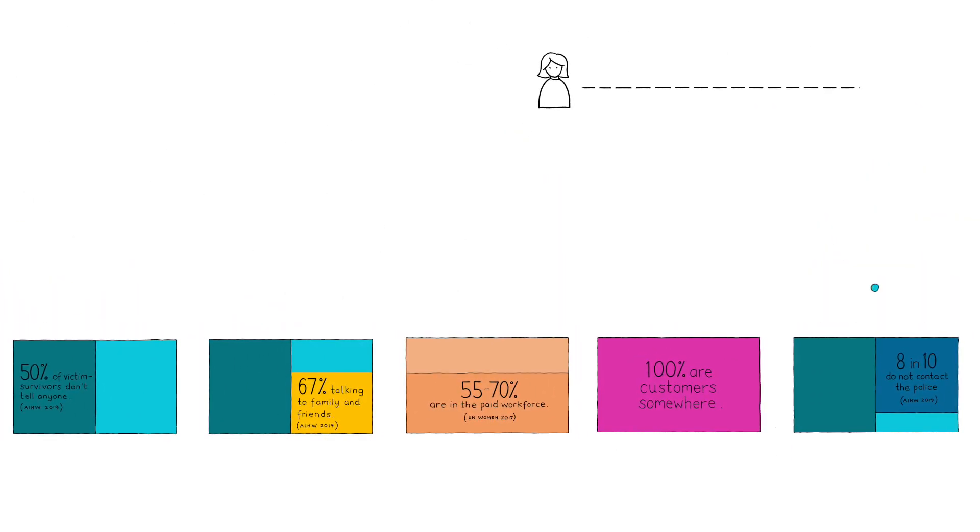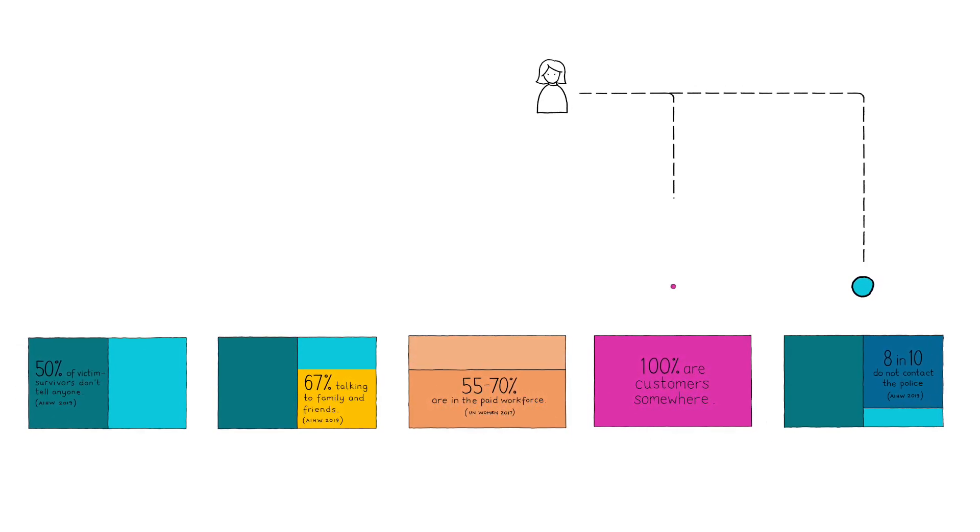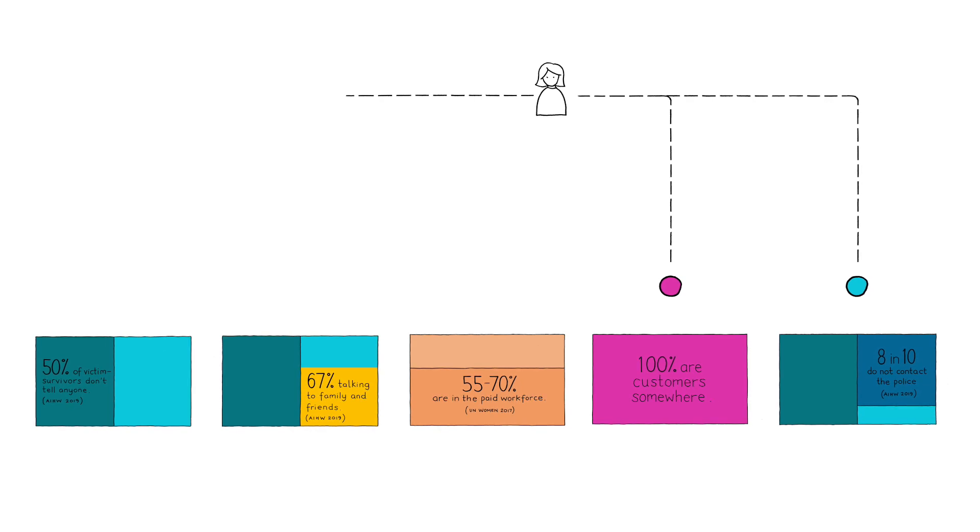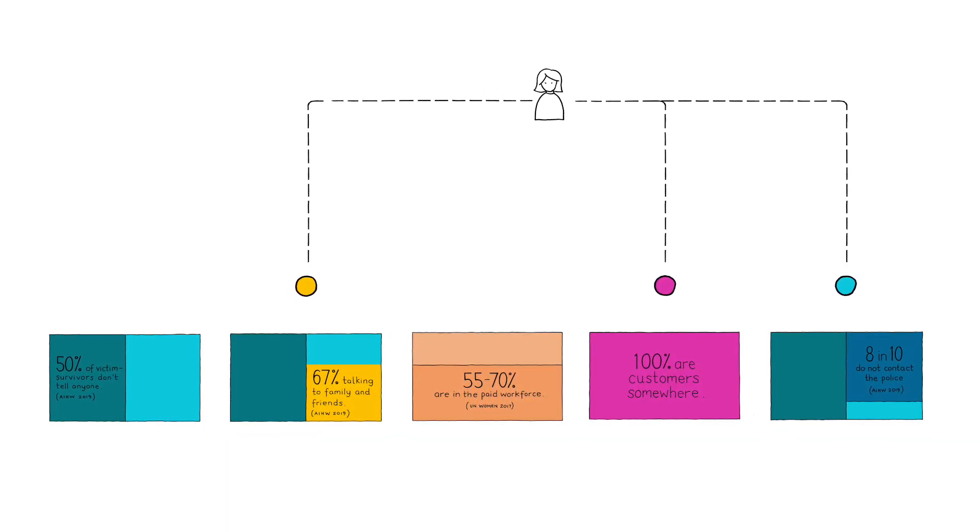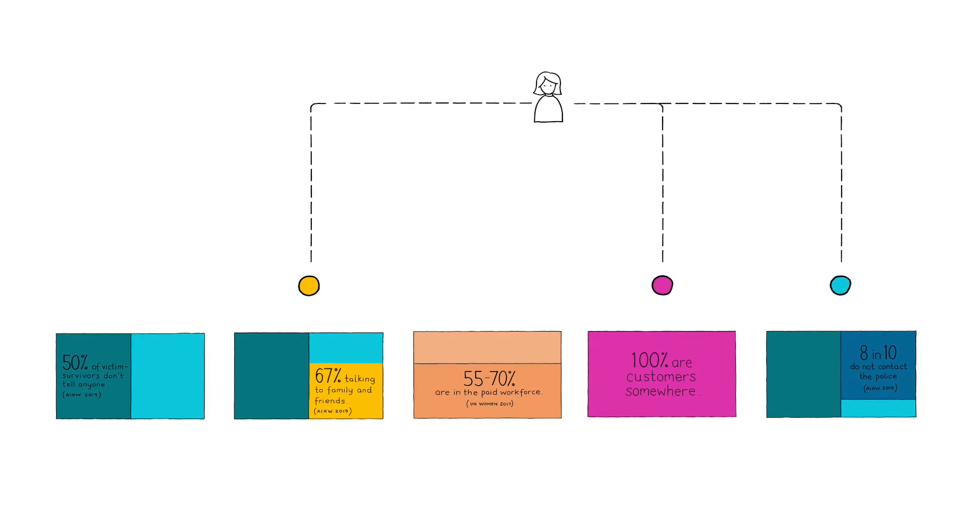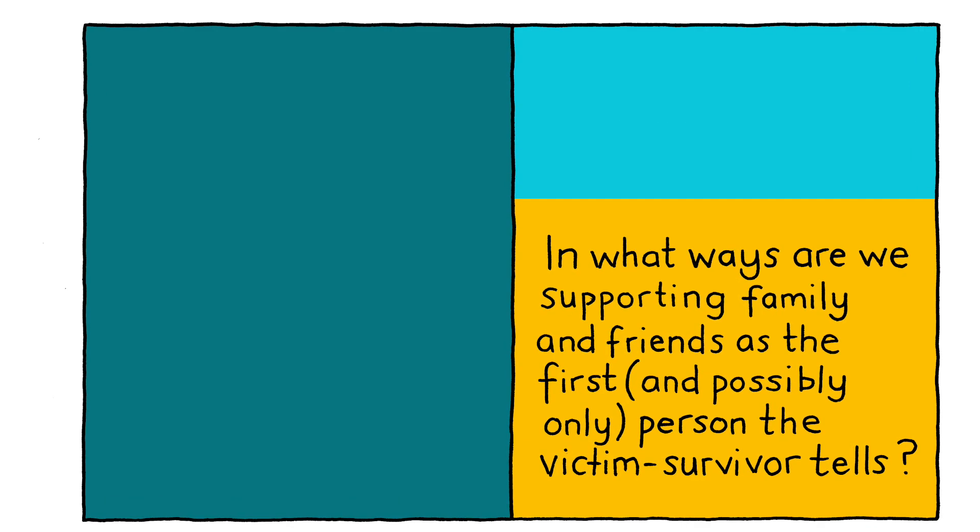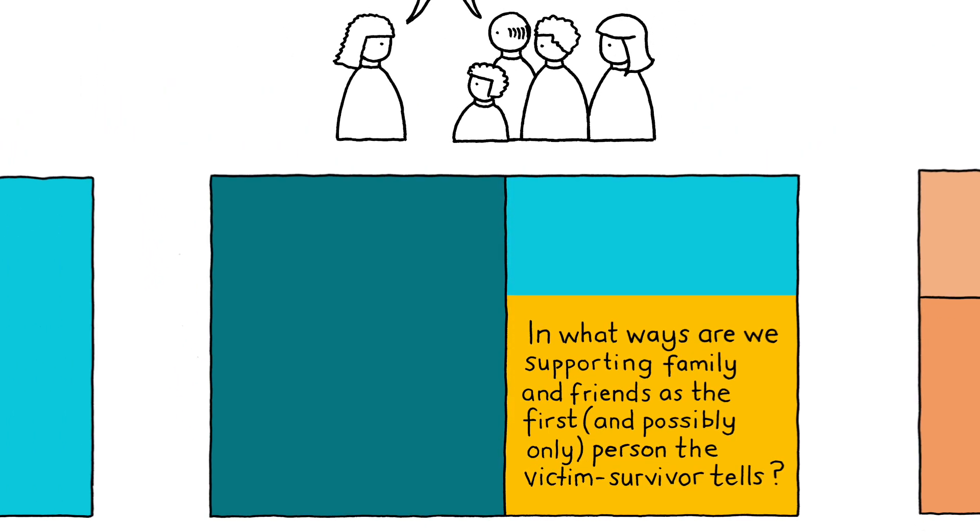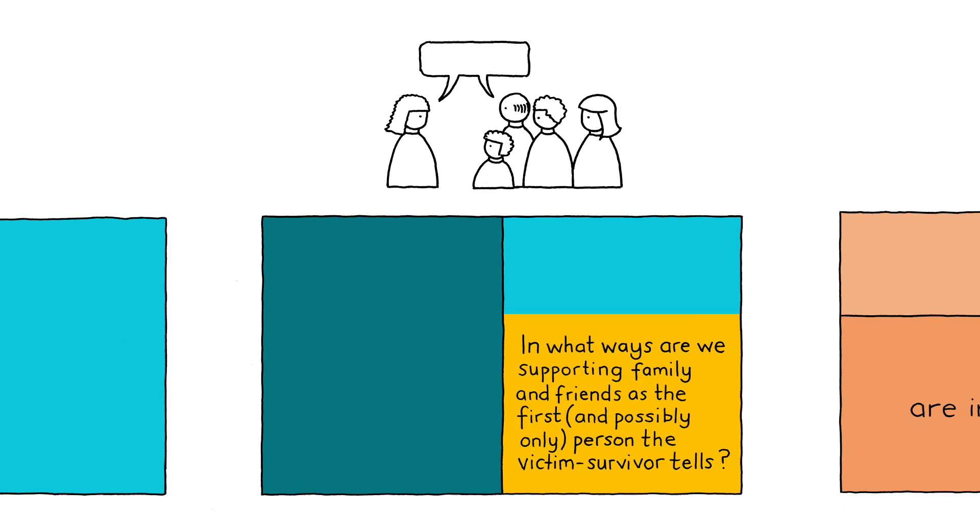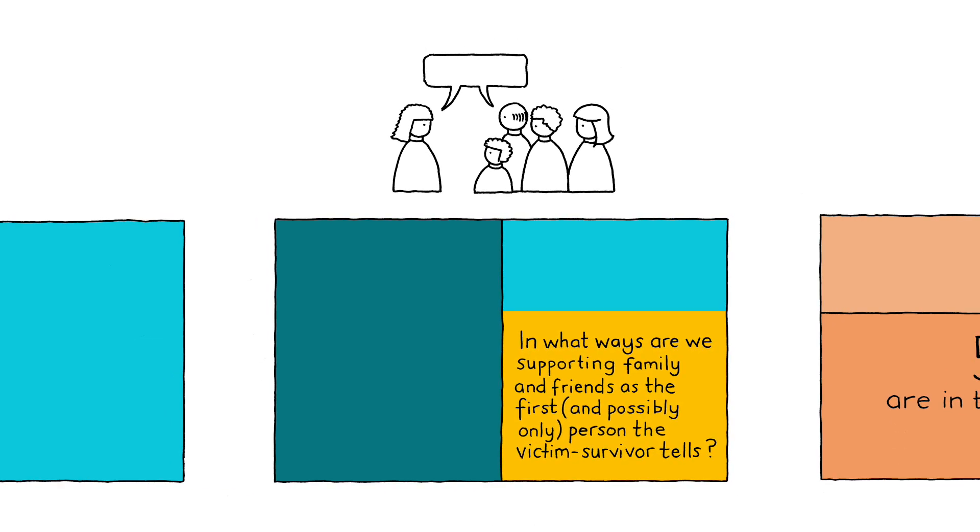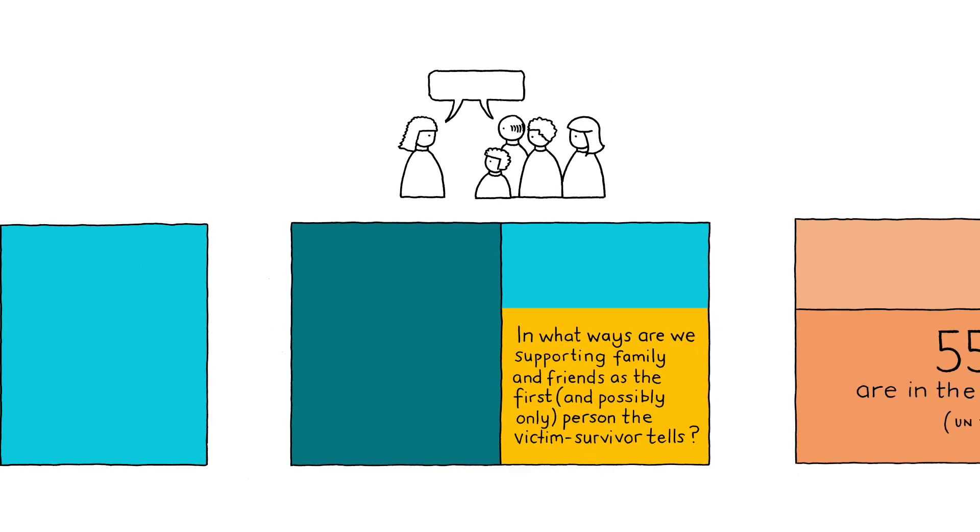Eva is in contact with police, although this happened outside of her control. She's a customer of several businesses. She's told a friend some of the details of her boyfriend's abusive behavior and prefers to talk to her friend more than anyone else. In what ways are we supporting family and friends as the first and possibly only person the victim survivor tells? And what might the experience be like for those family or friends if it's not clear how to access information or support that's relevant to them?